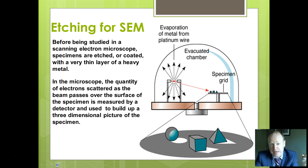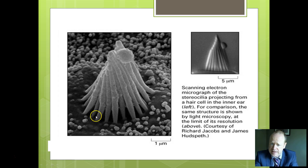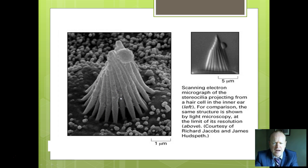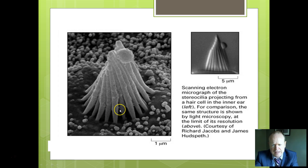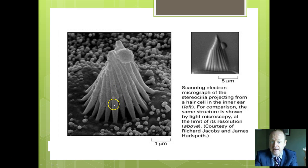Scanning electron microscopy requires the outside surface coated with something so it reflects the electron beam. Here's a scanning electron micrograph of cilia within a hair cell. That's a light microscope image of the same thing alongside an electron microscope image, and you can see a much greater level of detail provided by the electron microscope because of greater magnification and clearer resolution, due to the nature of the beam of electrons.